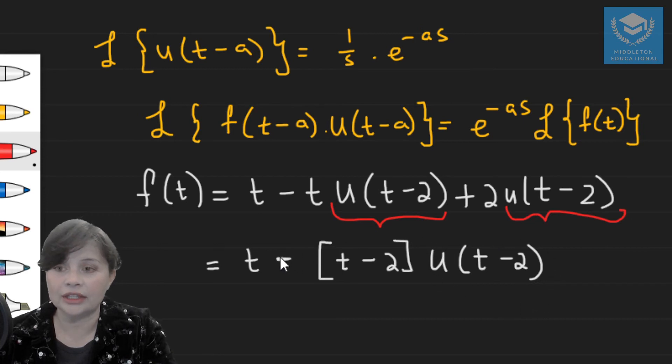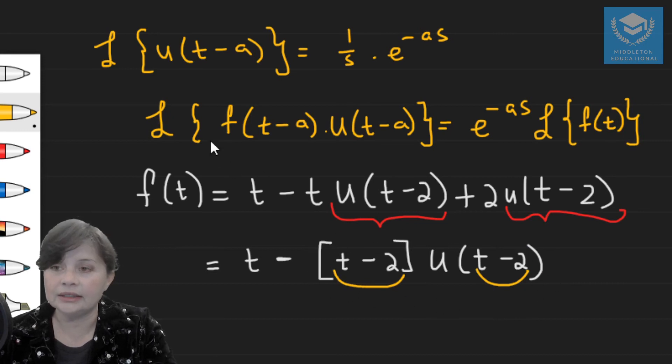I've also factorized out the negative because that way I will have t minus 2 and t minus 2. So if you compare the form of this function of that term, it is the same. It is the same form as my second shifting theorem.